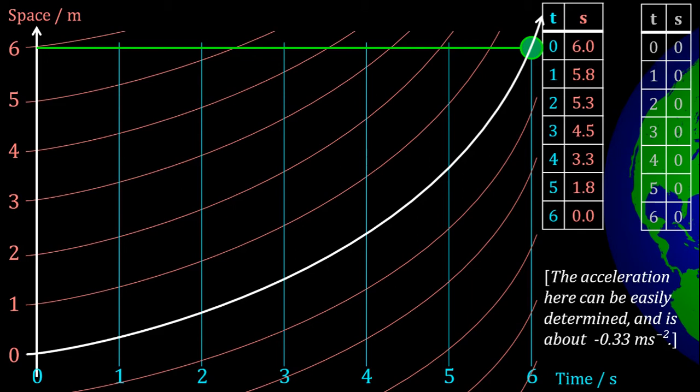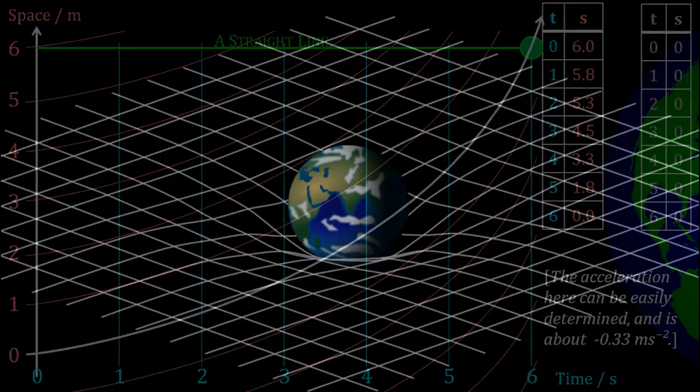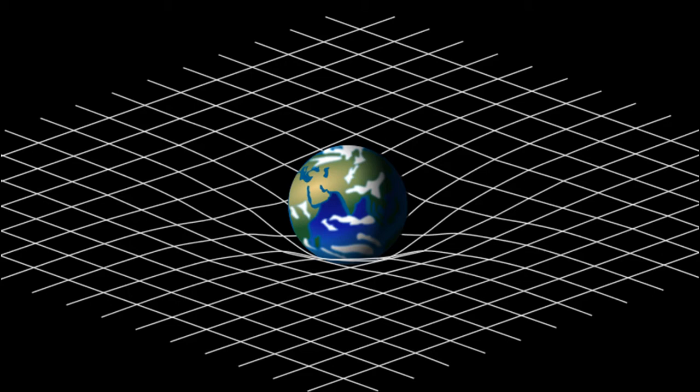Notice that there is nothing actually pulling on the object. It's still following a straight path through spacetime, according to Newton's first law. The object just appears to accelerate because spacetime is not flat.